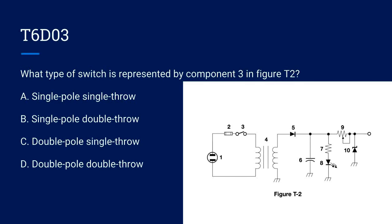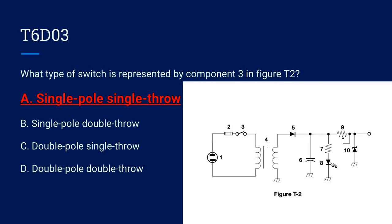T6D03. What type of switch is represented by component 3 in figure T2? A. Single pole, single throw. B. Single pole, double throw. C. Double pole, single throw. Or D. Double pole, double throw. The correct answer is A. Single pole, single throw.